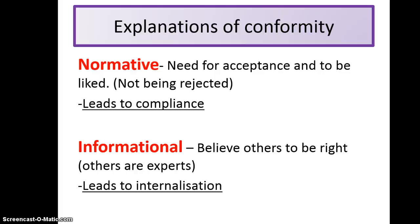Informational social influence works because we as human beings always want to be right. We sometimes see others as experts in a particular field. A good example is going into a religious building you've never been to before and everyone's taking off their shoes — you start looking around at what other people are doing because you believe them to be correct. So you change your behaviour publicly because privately you also believe them to be right, and this leads to internalisation. The best way to remember this is: informational starts with I, internalisation starts with I.